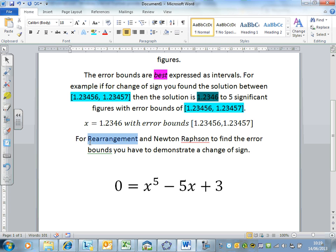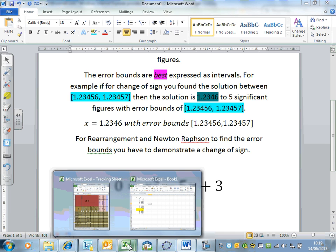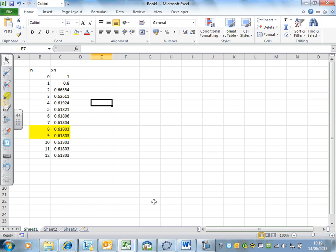I'm going to demonstrate it for the rearrangement method. What I've got here is a table—I've rearranged the equation and I've got an iterative sequence. After nine iterations, it converges to five significant figures of 0.61803. So our solution is 0.61803.